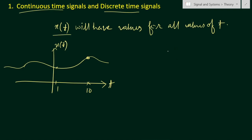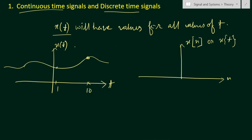The other type is the discrete time signal. A discrete time signal has values only at discrete intervals of time. Here we use small n, and the signal is written as x[n]. Discrete time signals are represented with square brackets, whereas continuous time signals use parentheses or curly brackets. In this case we will have certain values at specific integer points.